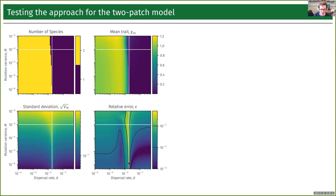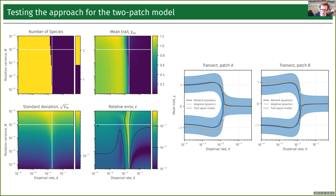Looking at the transect along this horizontal line, we can compare three different quantities: the trait-space equations in dashed black — tracking the locations of the peaks — adaptive dynamics, which is the no-variance approach, and these moment equations. The moment equations actually track the trait-space equations pretty well. We can also see that we get some local adaptation here. In the adaptive dynamics case, the trait is the same on both patches. But for the moment equations, we now have this reversion towards the mean in the off patches. It seems we can replicate the behavior of the trait-space equations quite well and track the local adaptation.